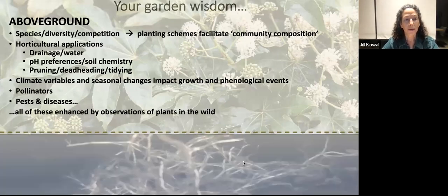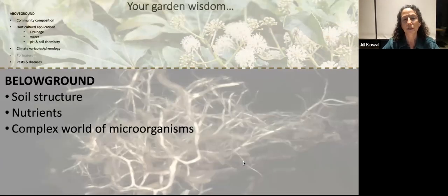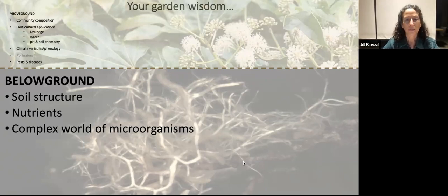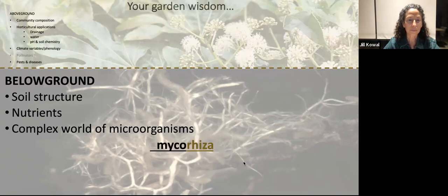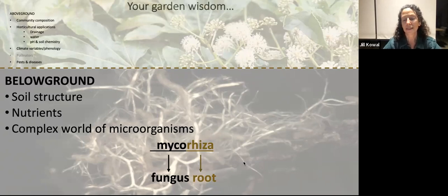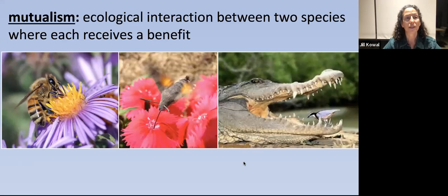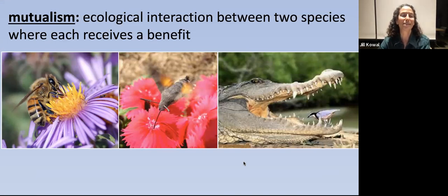Now I want to shift below ground. Most of us know that soil structure is important, soil nutrient composition, nitrogen deficits, phosphorus deficits, and NPK and the role they play in plants, and of course a very complex world of microorganisms. But it's still a bit of a black box. And then comes this idea we keep talking about — mycorrhizas. A mycorrhiza is really a fungus root — a single entity, a mutualism. A mutualism is an ecological interaction between two species, and in the case of mycorrhizas, they've been evolving for millions and millions of years.